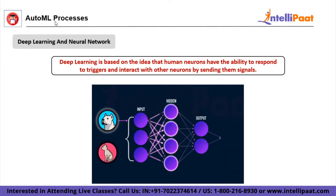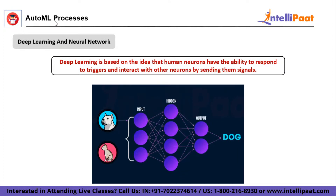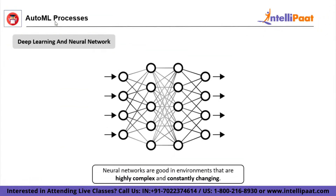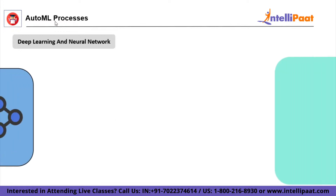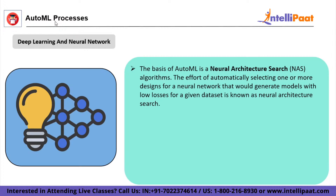For example, the neural network in charge of recognizing dogs might have a layer of nodes determining whether the object is furry, another layer looking for tails, legs, or color patterns. This complicated system develops automatically through constant training with thousands of different examples. Neural networks perform well in environments that are highly complex and constantly changing. Unlike traditional software programs, neural networks are scalable — new layers are added without increasing complexity. The basis of AutoML is neural architectural search, or NAS, algorithms.